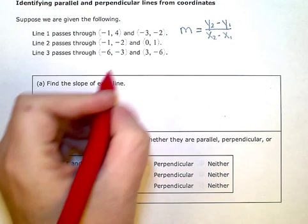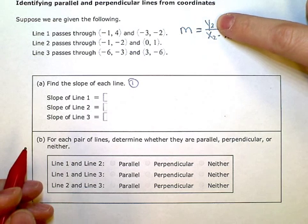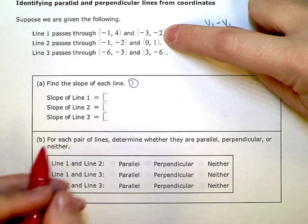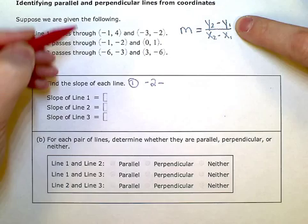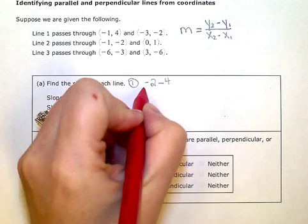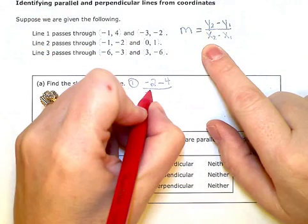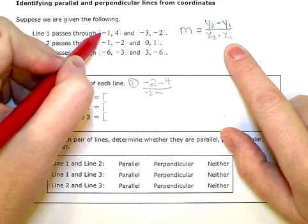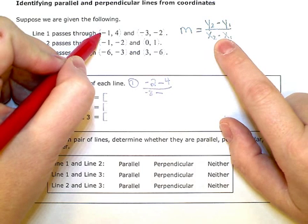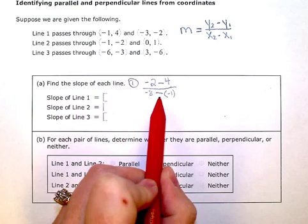For line one, my slope is equal to Y from my second coordinate, which is negative 2, minus Y from my first coordinate, which is 4. All divided by X from my second coordinate, which is negative 3, minus X from my first coordinate, which is negative 1. The only thing you have to be careful about is that you include or account for both the minus in the formula and the negative on the number itself. You have to include both. So this is minus negative 1.